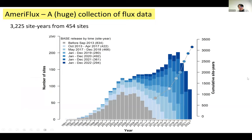AmeriFlux is not just a collection of sites, but most importantly a collection of flux data. Today we're talking about more than 3,000 site-years of data from 450 sites. Looking at data availability by year, from the early 1990s all the way to 2000, there's a lot of increase in terms of sites becoming available and sharing data, reaching a point of more than 100 sites operating concurrently.